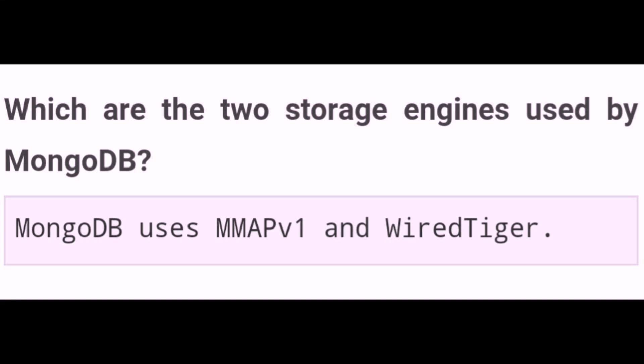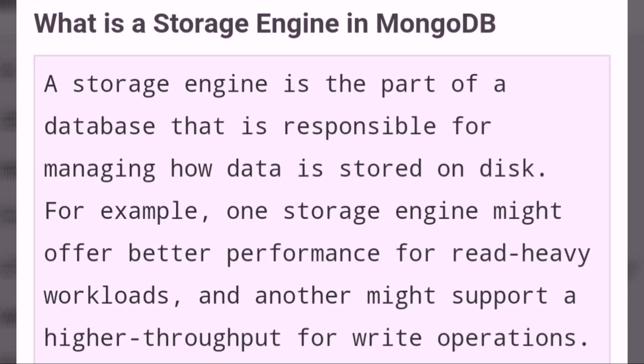Which are the two storage engines used by MongoDB? MongoDB uses MMAPv1 and WiredTiger. A storage engine is a part of a database that is responsible for managing how data is stored on disk. For example, one storage engine might offer better performance for read-heavy workloads, and another might support a higher throughput for write operations.